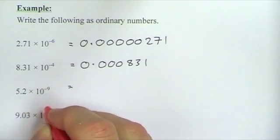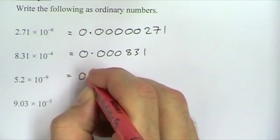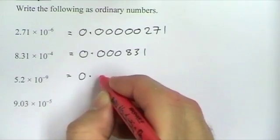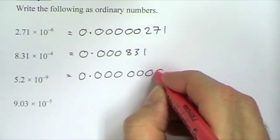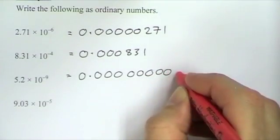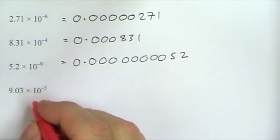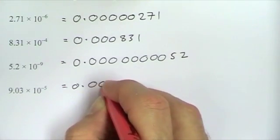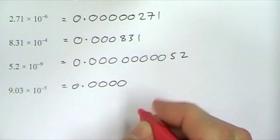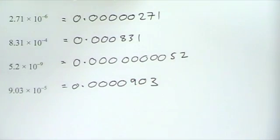For 5.2 times 10 to the minus 9: our answer starts as nought point, followed by another 8 zeros, then the digits 5 and 2. And for 9.03 times 10 to the minus 5: that's nought point, another 4 zeros making a total of 5 zeros, then the digits 9, 0, 3.